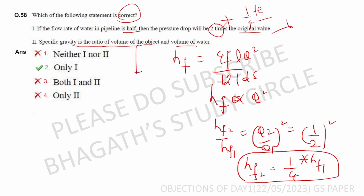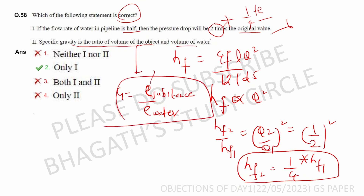Next: specific gravity is the ratio of volume of object to the volume of water — that is wrong. Specific gravity is the ratio of density of any substance to the density of water. So option one is incorrect; the density-based definition is correct.